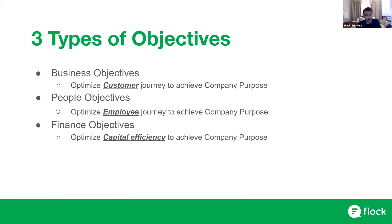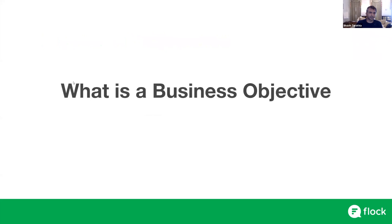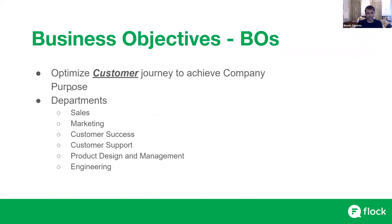I'm obviously open to feedback and comments because this is a framework I've just thought about and created, so I'd love to hear people's thoughts. I started thinking about it this way: there's business, people, and money — so customers, employees, and capital — and therefore objectives fall under these three buckets. So let's talk about business objectives. What exactly is a business objective? It's optimizing the customer's journey to achieve our organization's purpose.